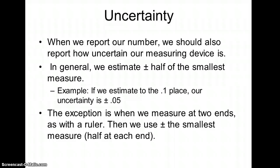The exception to this is if I measure at two ends, like with a ruler. It seems like we only measure at one end because that's where we're looking when we're trying to read a number. But remember, we line up a zero point at the other end, and we have to make some estimation there as well. So we have a degree of uncertainty at both ends. Just like before, we're still doing plus or minus a half of the smallest measure, but we're doing that twice. So we have plus or minus the smallest measure, the half at each end.